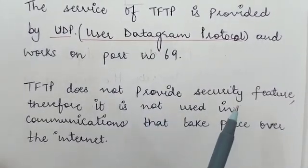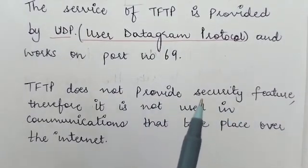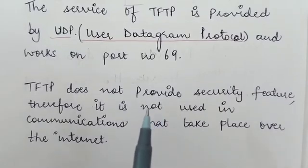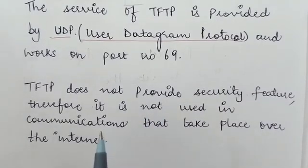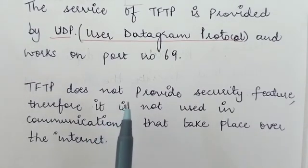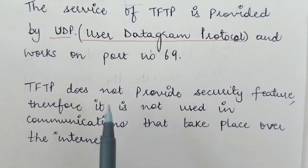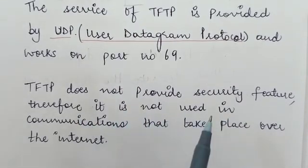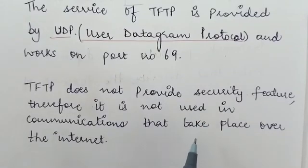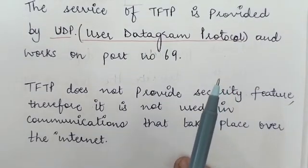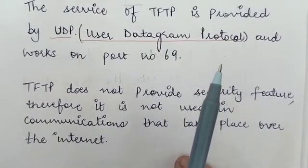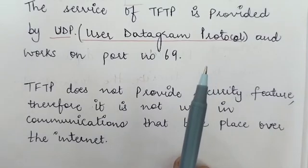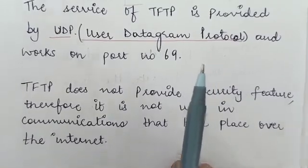TFTP does not provide a security feature. As we already know, UDP is not a reliable protocol for data communication. Since TFTP uses the services of UDP, TFTP does not provide any security feature. Therefore, it is not used in communications that take place over the internet, because the internet requires security from hackers and TFTP does not provide that security.